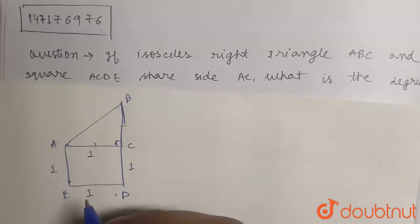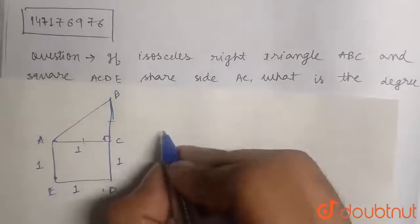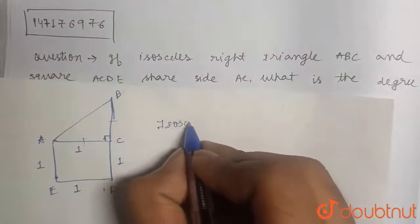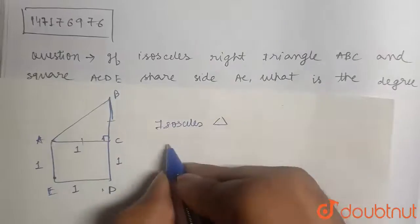Now, in isosceles triangle AC is equal to BC, why? Because it is an isosceles triangle.